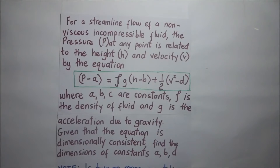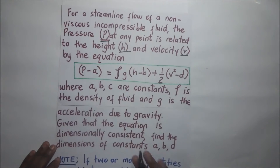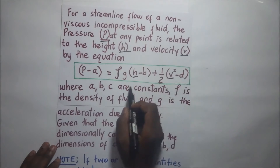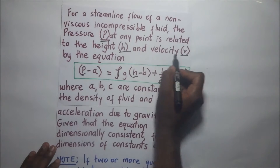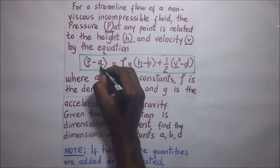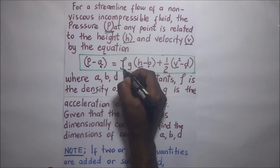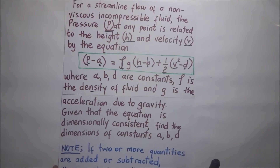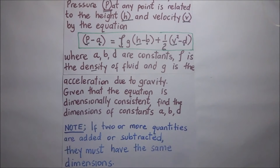For a streamlined flow of a non-viscous incompressible fluid, the pressure P at any point is related to the height H and the velocity V by this equation. We have pressure, height, and velocity V. A, B, and D are constants, Rho is the density of the fluid, and G is the acceleration due to gravity. Given that the equation is dimensionally consistent, find the dimensions of the constants A, B, and D.